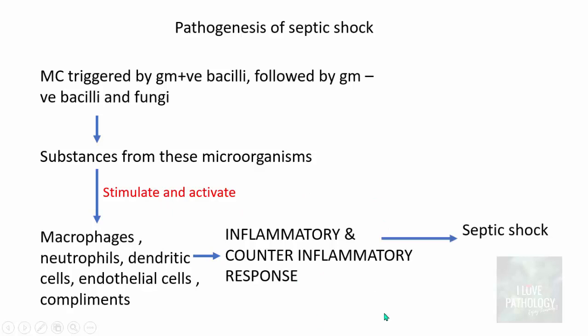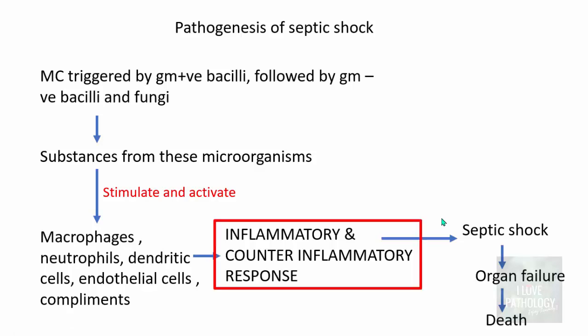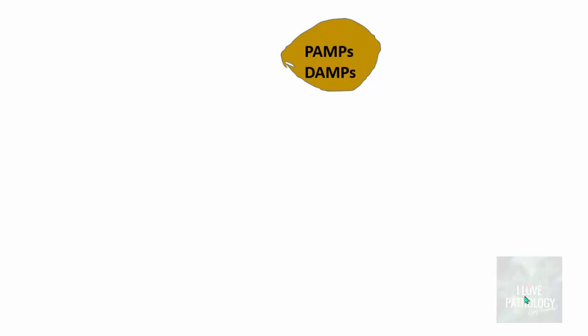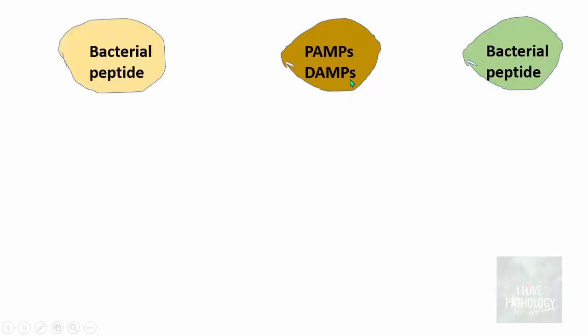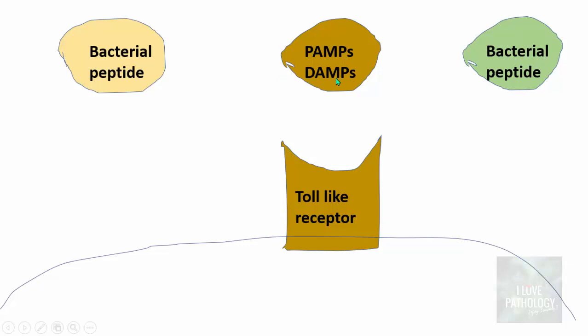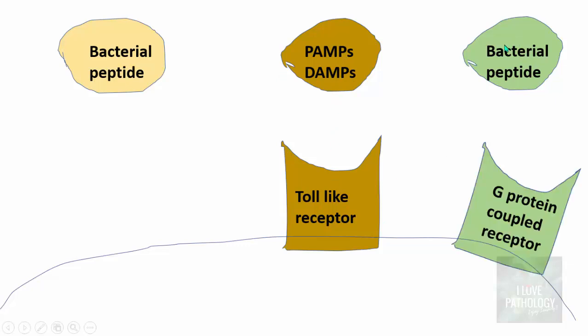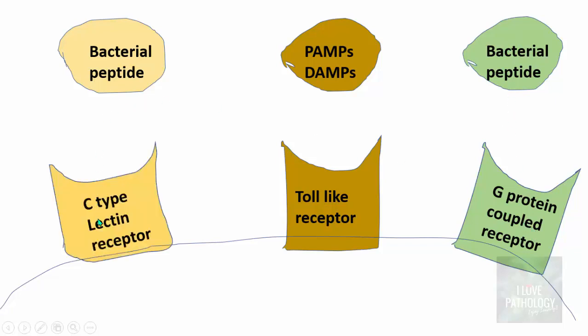Now let us understand what we mean by inflammatory and counter-inflammatory responses. These microorganisms contain certain substances like pathogen-associated molecular patterns (PAMPs) or damage-associated molecular patterns (DAMPs), and they can also be bacterial peptides. For all these substances there will be a receptor on the cell membrane — the cell can be a macrophage, endothelial cell, neutrophil, lymphocyte, or others. For PAMPs and DAMPs, you have toll-like receptors; for bacterial peptides, you have G-protein coupled receptors and C-type lectin receptors.